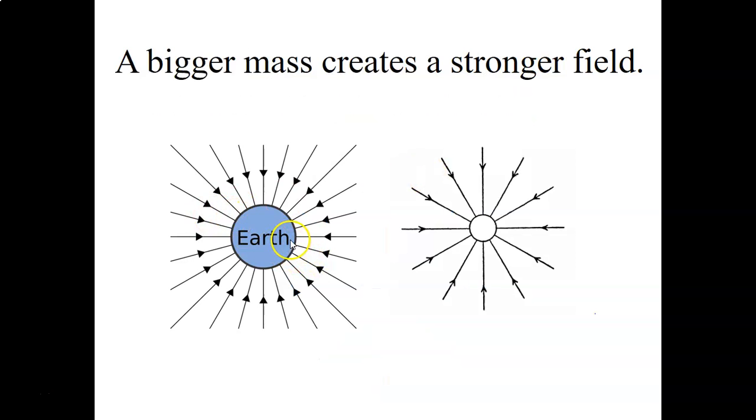The larger the mass, the stronger the gravitational field. So this would represent the Earth, and this might be the Moon.